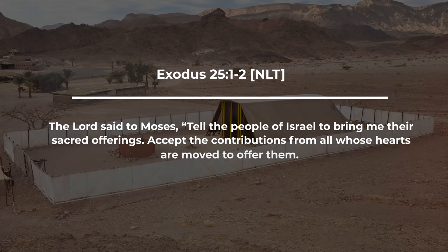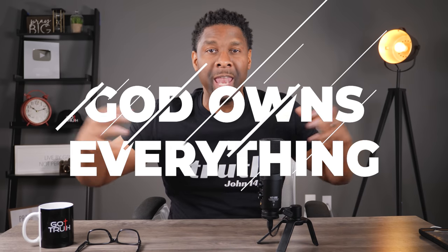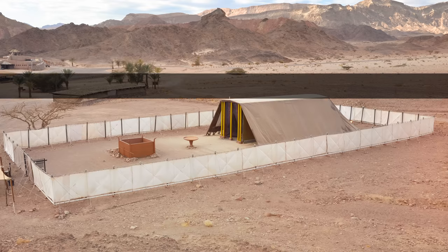It says: The Lord said to Moses, tell the people of Israel to bring me their sacred offerings. Accept the contributions from all whose hearts are moved to offer them. God is basically saying, I don't want your money if it's not something that you can give from the heart. If you can't give gold and silver and all the different things they're going to offer to build this tabernacle, he says, I don't want it. And that's a good present-day application for us — God owns everything, and if we can't give to help the body of Christ with a willing heart, God says keep it.